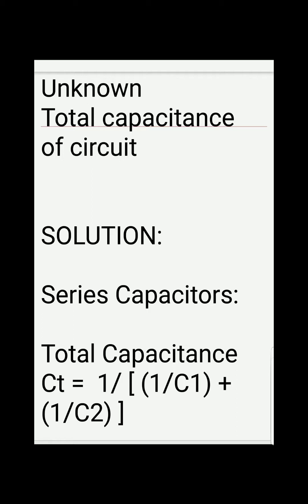The formula is: total capacitance Ct = 1 / [(1/C1) + (1/C2)]. So it's the reciprocal of the sum of the reciprocals of the individual capacitors. Now we'll check out the substitution.